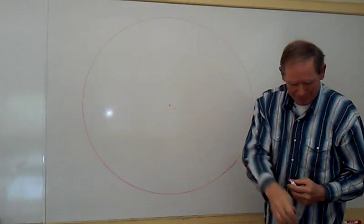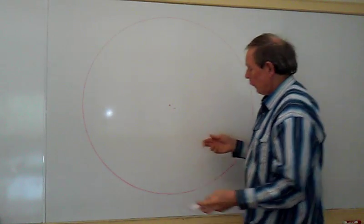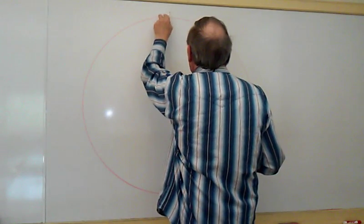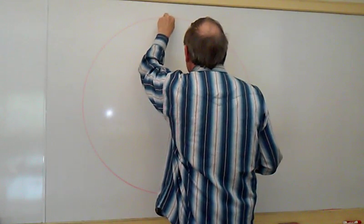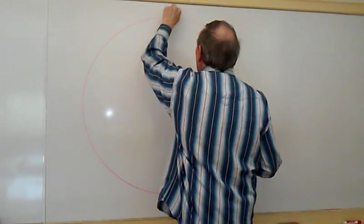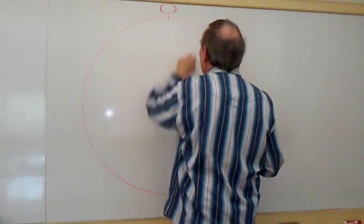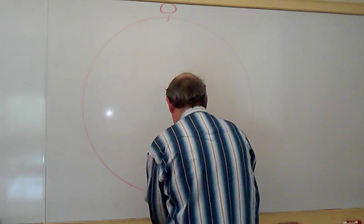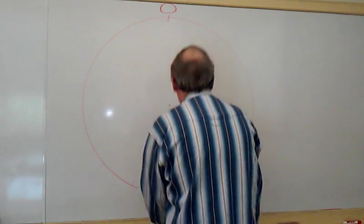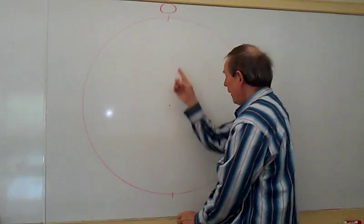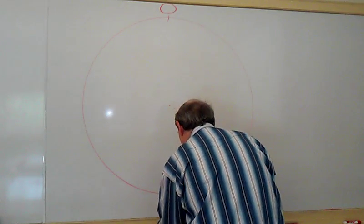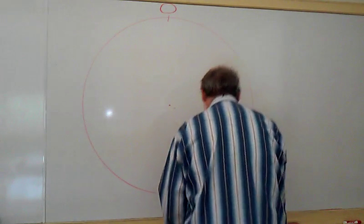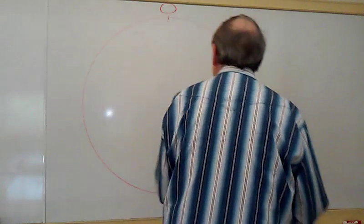Now we pick any place right near the top here and that's going to be our zero, the top of the circle. Going through that center we find the bottom, the very bottom, so it's the diameter of the circle. That's five, halfway down.